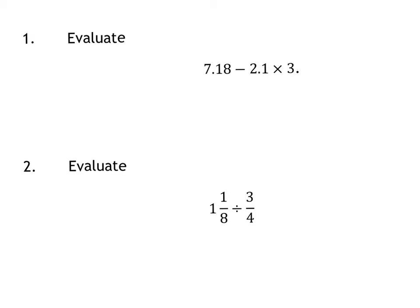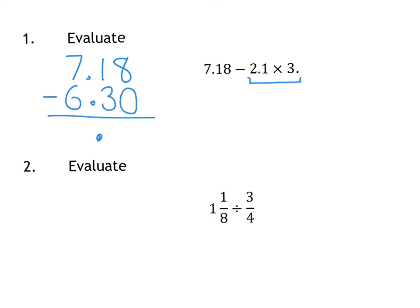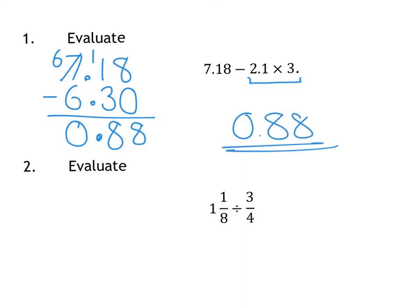Question 1 is a BODMAS question. You should remember that we do the multiply bit first. So the real sum is 7.18 take away 6.3, if I've multiplied that by 3. It's always handy to do a written sum for these rather than try to do it mentally, because that's where mistakes are made. So we end up with 8 minus nothing is 8. Borrowed from there, 11 take away 3 is 8 and 6 take away 6 is 0. So our answer is 0.88.